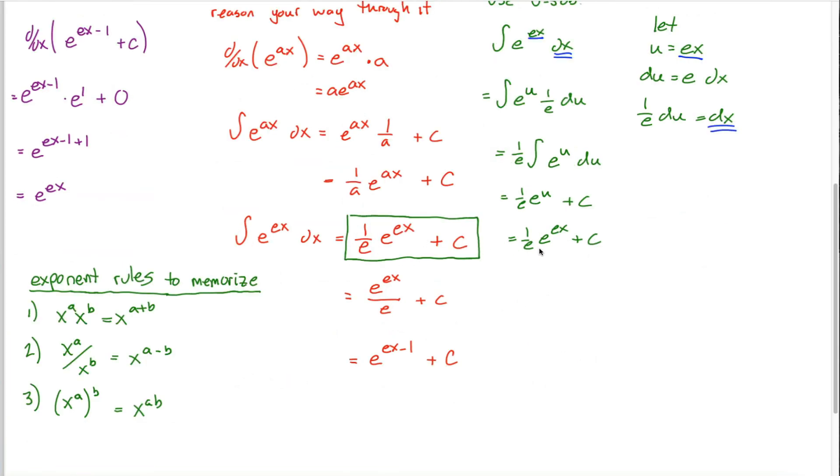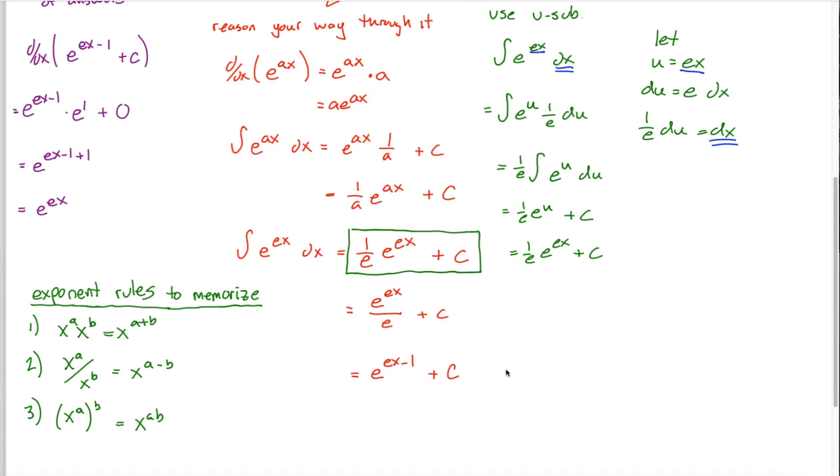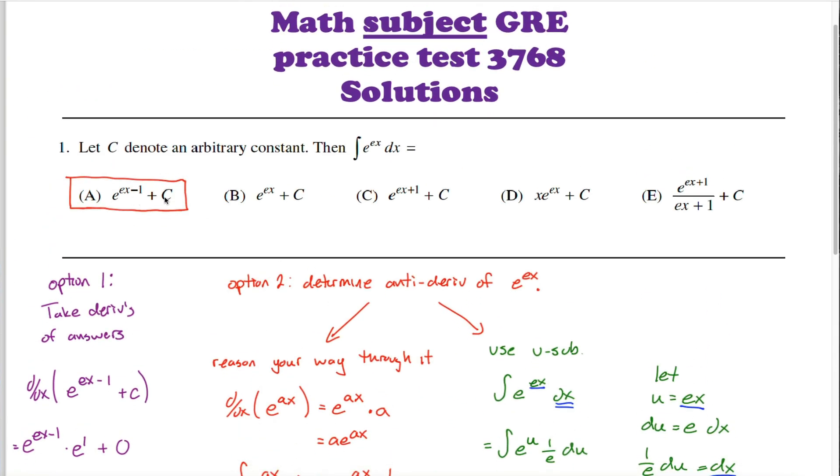Much like we saw right here, that's the correct answer, but it's not written in the form that the test has their answers in. You're supposed to recognize that and algebraically rewrite it as e to the ex minus 1 plus c, which is answer A.